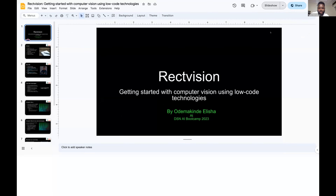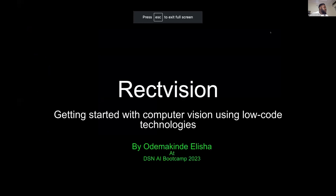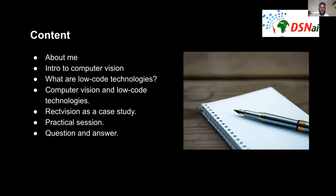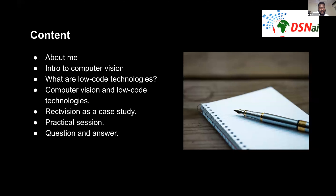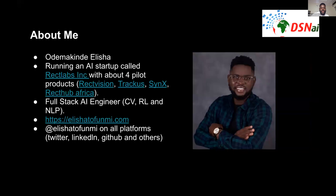I'll be talking about no-code and getting started with computer vision using low-code technologies, but I'll be making more reference to a product called Rect Vision. A little about myself — my name is Elijah, and I run a startup called Rect Labs. At Rect Labs we are focused on enterprise-level AI for businesses, and we have about four different pilot products: Rect Vision, Track Course, CNEX, and Rect of Africa.